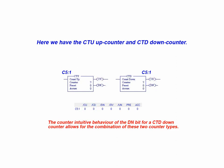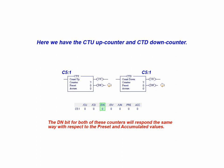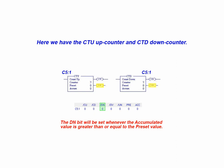The counterintuitive behavior of the done bit for the CTD down counter allows for the combination of these two counter types. The done bit for both of these counters will respond in the same way with respect to the preset and accumulated values. The done bit for each counter will be set whenever the accumulated value is greater than or equal to the preset value.